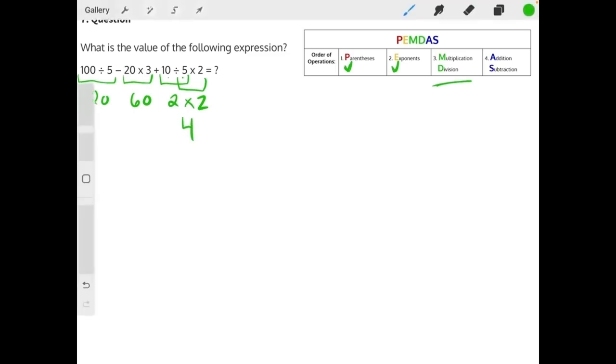So now we can go back and rewrite this expression and continue applying PEMDAS. We have 20 minus 60 plus 4.